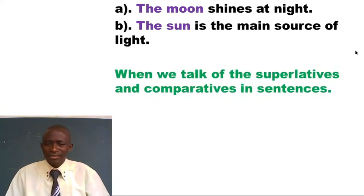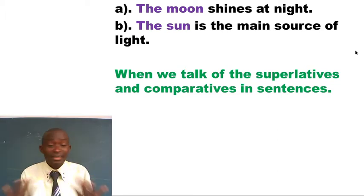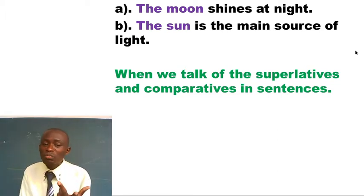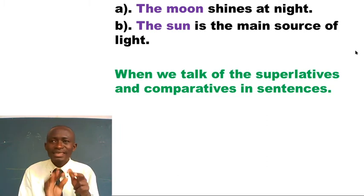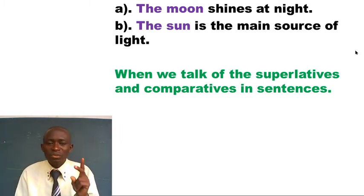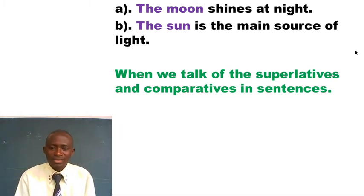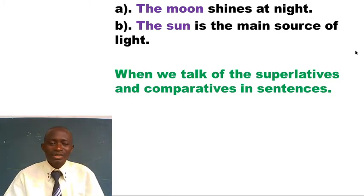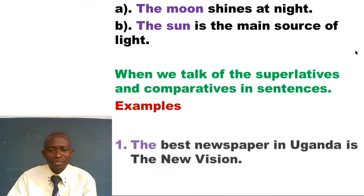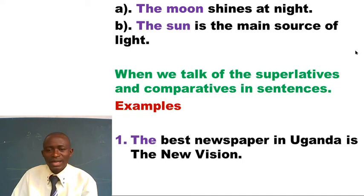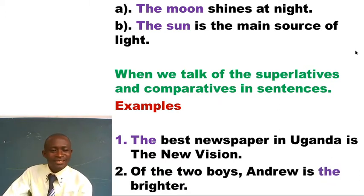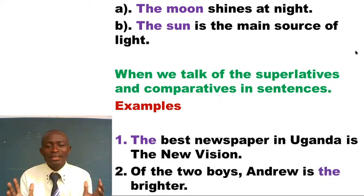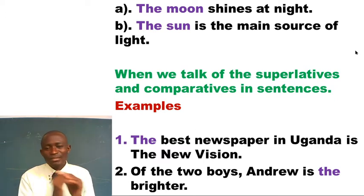Let's learn how to use article THE when we talk about superlatives and comparatives — comparing things, comparing two people. For example, Tom and Alex in terms of height: 'Tom is the shorter of the two boys.' Look at this example: 'The best newspaper in Uganda is the New Vision.' Next: 'Of the two boys, Andrew is the brighter.' We are comparing these two in terms of being bright.